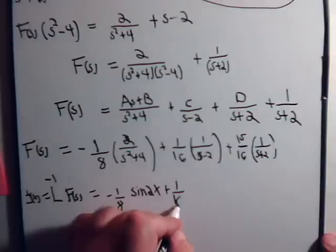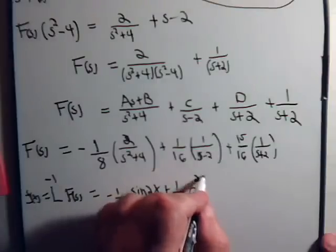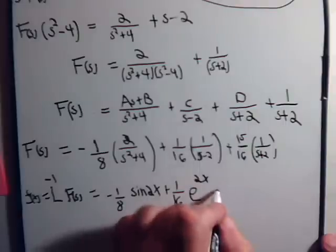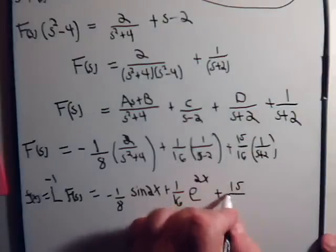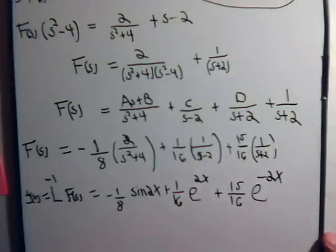So that should be equal to minus 1 over 8, this would be the sine of 2x, plus 1 over 16 e to the plus 2x, plus 15 over 16 e to the minus 2x. And there's our f of x.